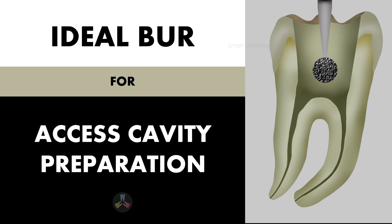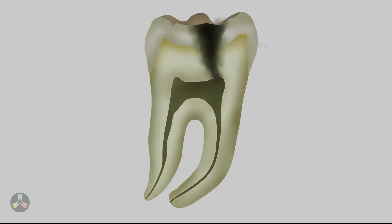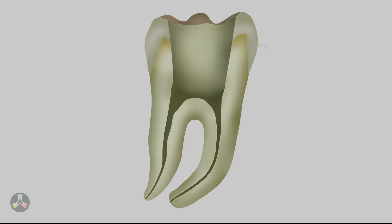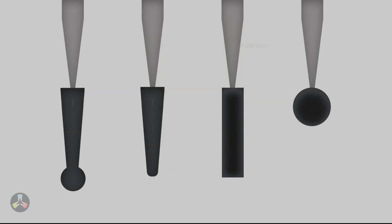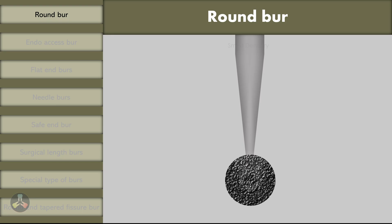In this presentation, let's see how to choose the ideal bur for access cavity preparation while doing root canal treatment. Access cavity preparation includes removal of decay in a pulpally infected tooth and enlarging the cavity to facilitate cleaning and shaping. There are many burs which could be used, and every practitioner has their own opinion. I have compiled a list of commonly employed burs and will try to identify which could be considered the bur of choice.